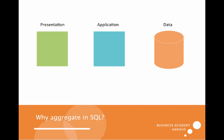So why do we aggregate in SQL? We can illustrate the typical architecture of, for example, web applications like this. We have the presentation layer, we have the application layer, and we have the data layer — also named the three-tier application structure. When we have all our data in our database we can pull out everything we like. We could pull out a large number of data and then work on it in our application layer, where you have your PHP or C-sharp or whatever preferred server-side language.